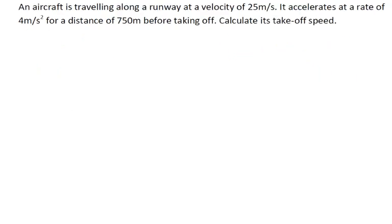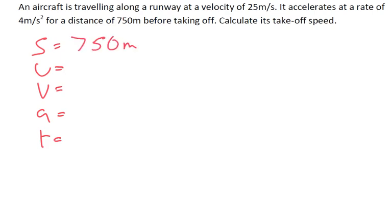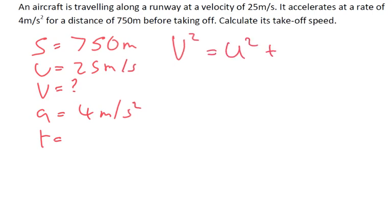An aircraft is traveling along a runway at a velocity of 25 meters per second. It accelerates at a rate of 4 meters per second squared for a distance of 750 meters before takeoff. Calculate the takeoff speed. So again, s, u, v, a, and t. We know the distance traveled is 750 meters, the initial velocity was 25 meters per second, the final velocity we don't know, and the acceleration is 4 meters per second squared. We're trying to find the takeoff speed.